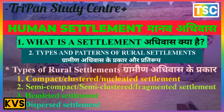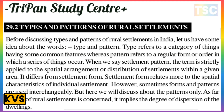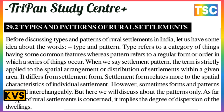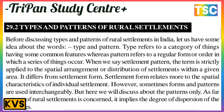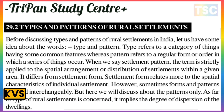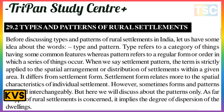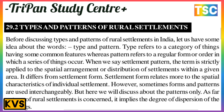Next, let us look at the types and patterns of rural settlement. Before discussing types and patterns of rural settlement in India, let's understand the words 'types' and 'pattern.' Types refer to the category of things having some common features. Pattern refers to the regular form or order in which a series of things occur. When we say settlement pattern, the term is applied to the spatial arrangement in the distribution of settlements given to an area.